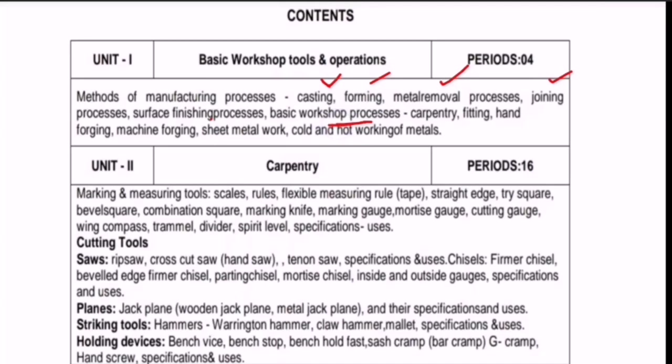Now we are entering into basic workshop processes like carpentry, fitting, hand forging, machine forging, sheet metal work, cold and hard working of metals. So in that, the first basic workshop process is carpentry. So today we are covering carpentry in this video.